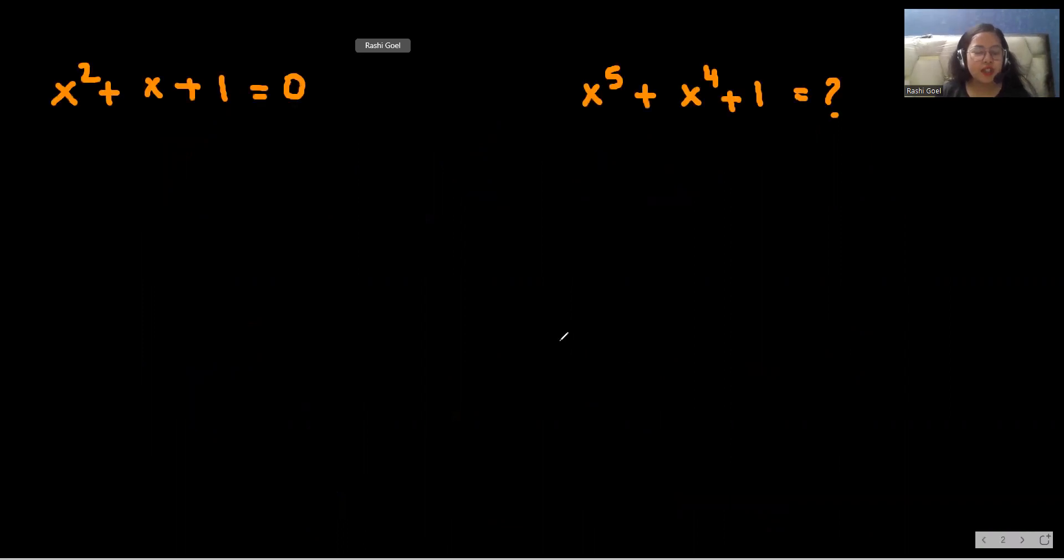Our question is x square plus x plus 1 equals 0 and we have to find the value of x power 5 plus x power 4 plus 1. So what we have to do? We always find the value of x but today we'll take a different approach. We could use the method of substitution or manipulation. So let's start.